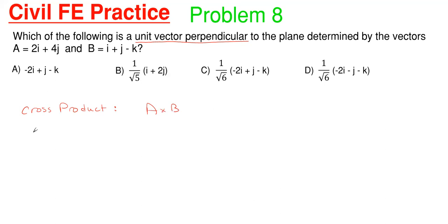So what we're going to do is we're going to set up our little mini matrix here. We're going to have I, J, K. And then we're going to put A here on the second row, which is 2I plus 4J and then 0K. And then B will just be 1I plus 1J minus 1K.